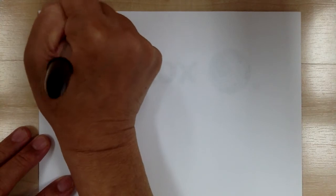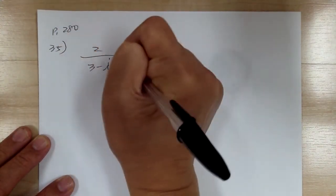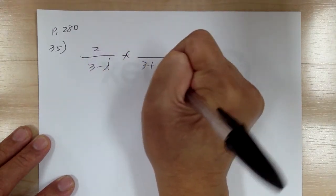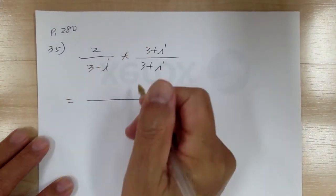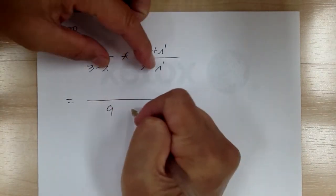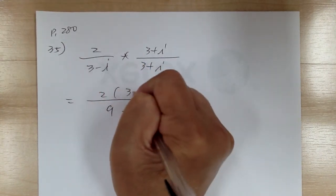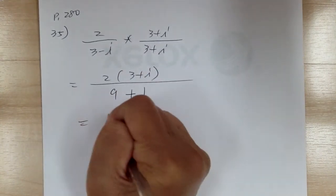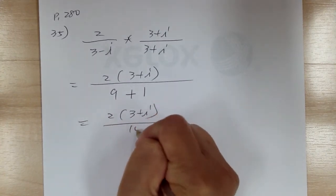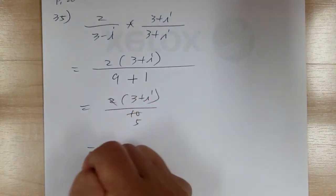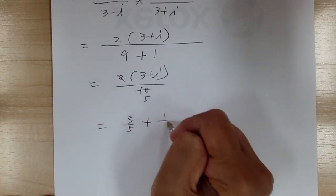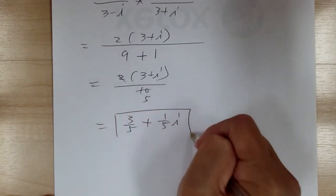Number 35: you got 2 over (3 minus i). Multiply by conjugate (3 plus i) over (3 plus i). The bottom gives 9, and i times i is negative 1, so it becomes plus 1, giving 10. This equals 2 times (3 plus i) over 10. You can cancel, so this equals 3 over 5 plus 1 over 5i.